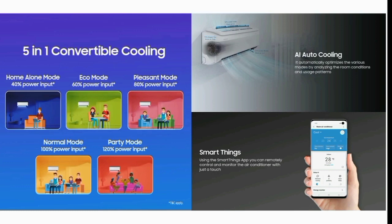If you choose the AC at normal level, you can use the 5-in-1 convertible fourth option. If you choose the AC at 100% running, that is the normal level. You can also choose the AC at 90% power. The fifth option allows the AC to run at 120% power. If you have a 5-in-1 convertible, you can use AI mode.